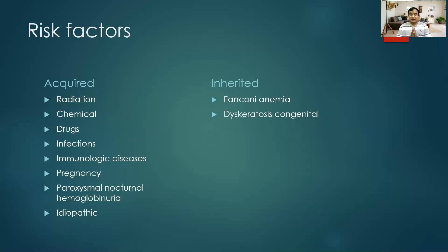Other infections that can precipitate aplastic anemia are Epstein-Barr virus, parvovirus, and even HIV. Some immunological conditions like SLE can cause aplastic anemia. In some pregnant ladies there can be bone marrow aplasia causing aplastic anemia. Paroxysmal nocturnal hemoglobinuria (PNH) — initially presenting as hemolytic anemia — can later convert to aplastic anemia. In clinical practice we have missed PNH diagnoses and labeled patients as idiopathic aplastic anemia, so we must always consider PNH as a cause.